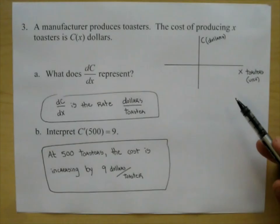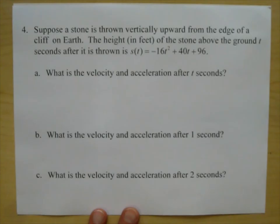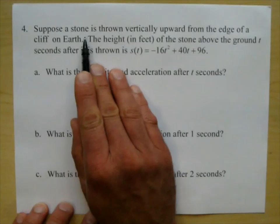Now, problem four has about 10 parts to it and is going to involve velocity. In your homework you have a lot of velocity problems. It's different than the bug on the number line, but because we've done that, we can get through section 3.6 with more efficiency.